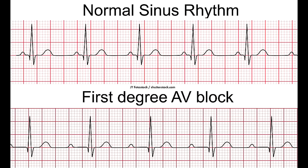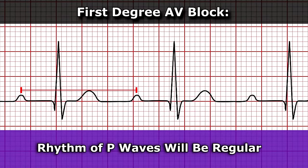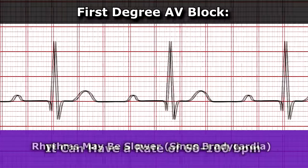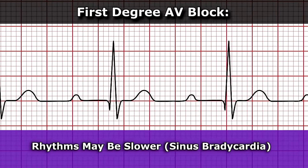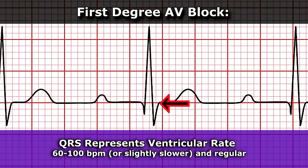For the characteristics and criteria of a first-degree heart block: the rhythm looks very similar to normal sinus rhythm. P waves are normal and the atrial rhythm is regular, with a rate between 60 to 100 beats per minute, though sometimes you may see sinus bradycardia with a first-degree AV block. The QRS complex is normal, measuring less than 0.12 seconds, the ventricular rate is 60 to 100 beats per minute or slightly slower, and the ventricular rhythm is regular.